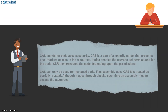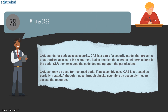Question 28: what is CAS? CAS stands for Code Access Security. It is part of a security model that prevents unauthorized access to resources and enables users to get permissions for the code — CLR then executes code depending upon permissions. CAS can only be used for managed code written in the .NET framework. If an assembly uses CAS, it is treated as partially trusted and goes through checks each time it tries to access resources.